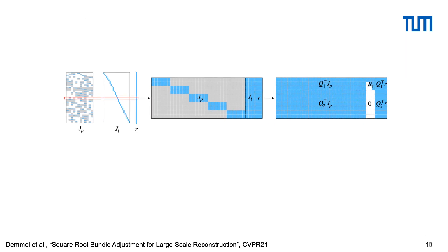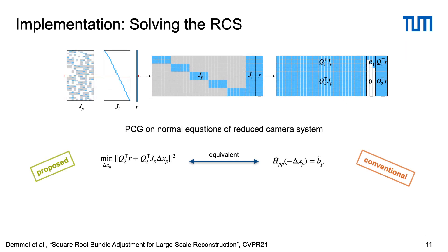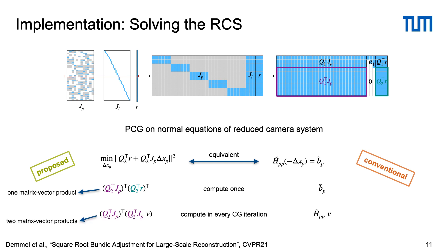To solve the reduced camera system, we run preconditioned conjugate gradient, but without forming the Hessian explicitly. The right-hand side is computed once with one matrix-vector product per landmark. In every CG iteration, we efficiently evaluate the product with the Hessian by two matrix-vector products per landmark. All steps are parallelized over landmarks.